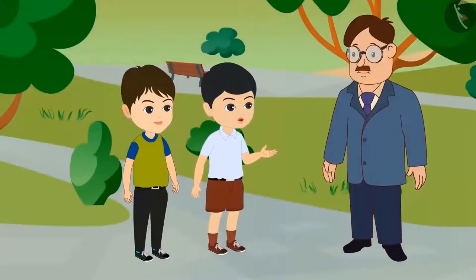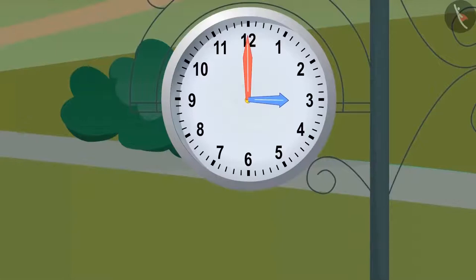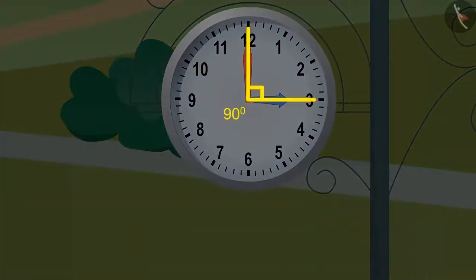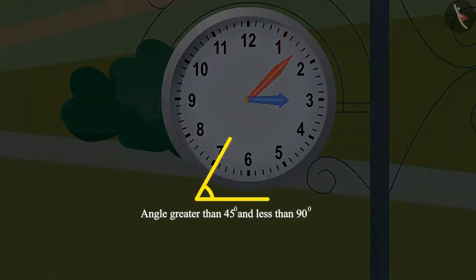I will try, uncle. The angle of 90 degrees is made at 3 o'clock. And the angle of 45 degrees is half of this angle. That means the angle of 45 degrees is formed approximately between 5 minutes past 3 and 10 minutes past 3. That means the angle greater than 45 degrees and less than 90 degrees is formed at 5 minutes past 3.